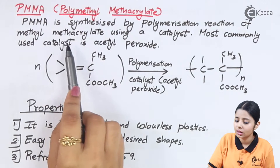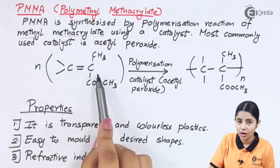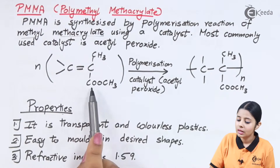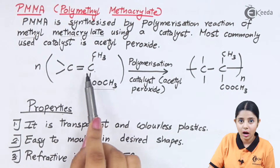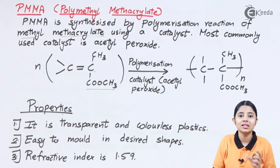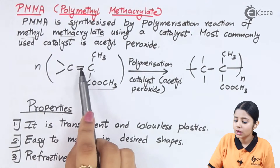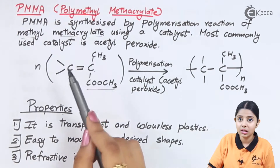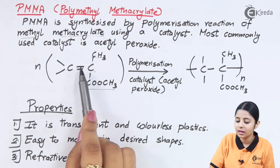The reactant here is methyl methacrylate. Looking at its structure, we have a carbon double bond carbon. This carbon is attached to CH3 and also to COOCH3. COOCH3 represents an ester group — RCOOR — so ester is the main functional group of the monomer. The reactant is quite complex; it is not a simple propylene or ethylene group but a complex monomer with a double bond carbon carrying a methyl group and an ester group.